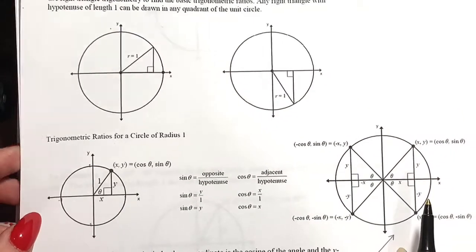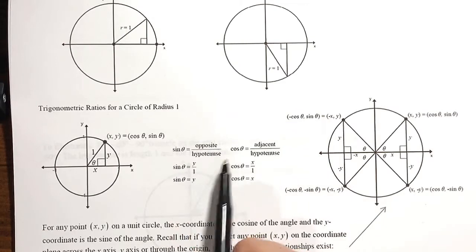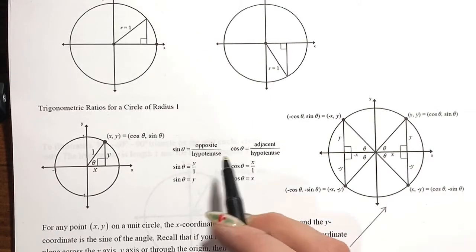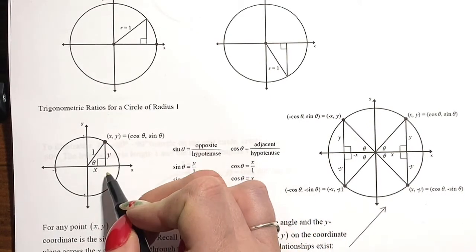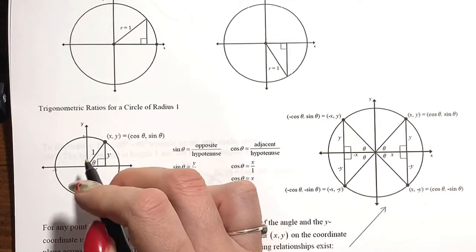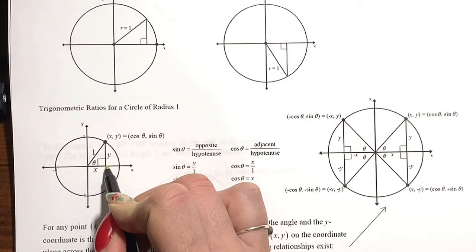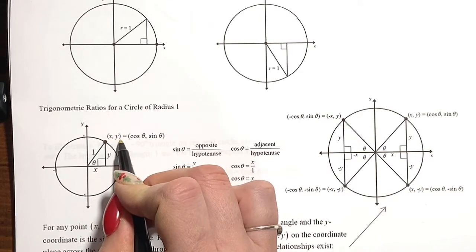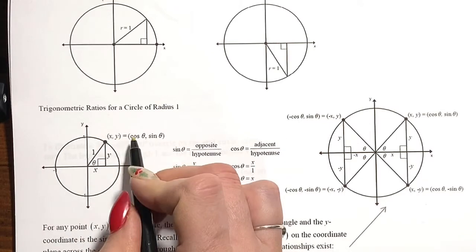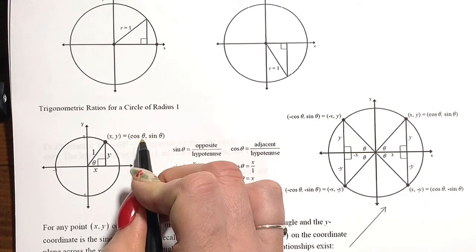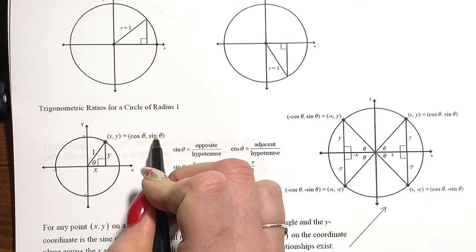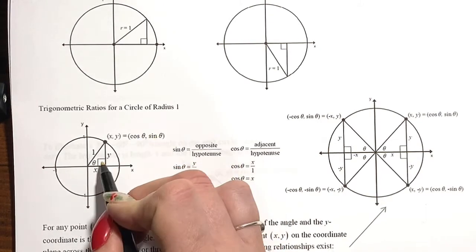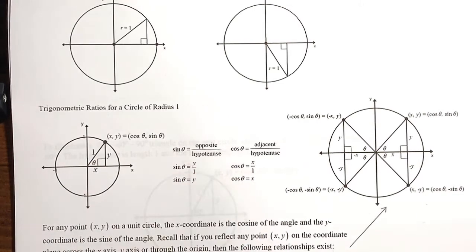Before we get started, let's review. We have our trig ratios: sine is opposite over hypotenuse, cosine is adjacent over hypotenuse. So if I put a little right triangle on my unit circle with an x and y axis, I'm going over x and up y — I can think of that as a coordinate point x comma y. In the unit circle, that x represents cosine of your angle theta, and the y represents sine of theta. So cosine of theta is your x value, sine of theta is your y value, where theta is the central angle inside the triangle.